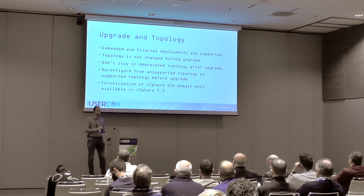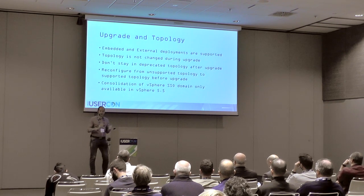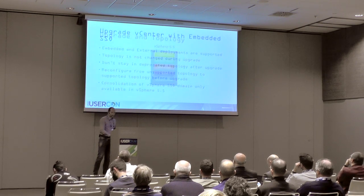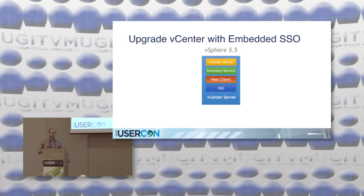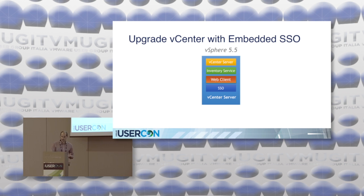Consolidation of vSphere SSO domains is supported only in version 5.5. We're looking at how to improve that in the next release. As an example of what happens with topology: if you have vSphere 5.5 with vCenter Server and inventory service all installed on the same machine and you upgrade, the architecture is not changed — you remain in the same topology.